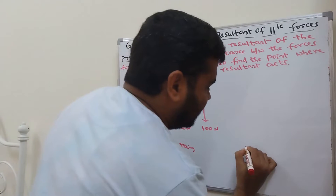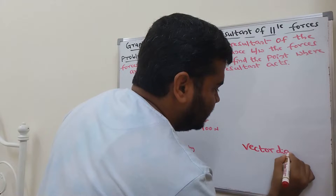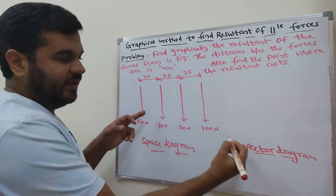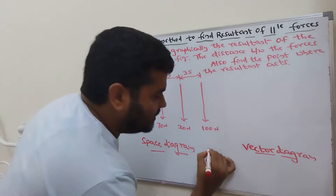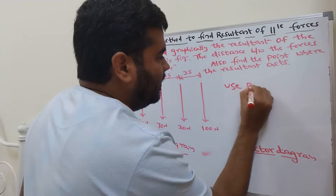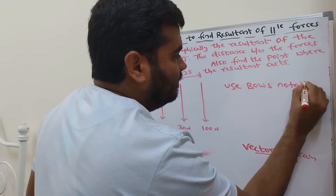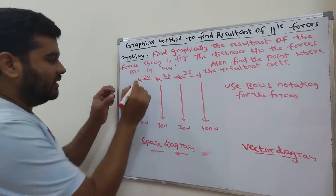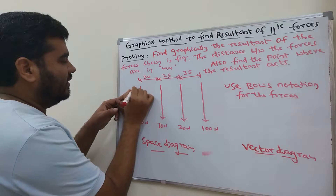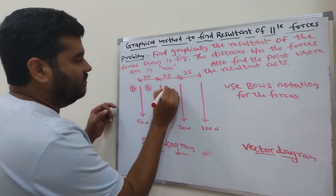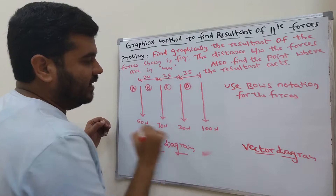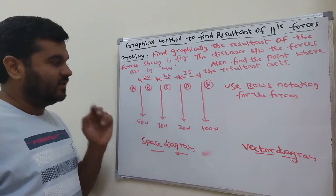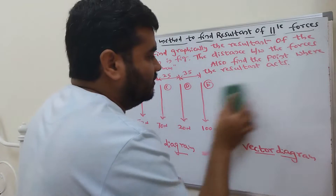The second step is to draw the vector diagram. Before drawing the vector diagram, mark the forces using Bow's notation. The first force lies between A and B, the second force between B and C, the third force between C and D, and the fourth force between D and E. After marking the notation, start drawing the vector diagram.